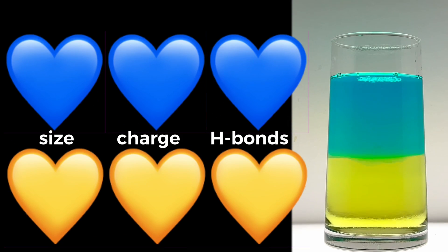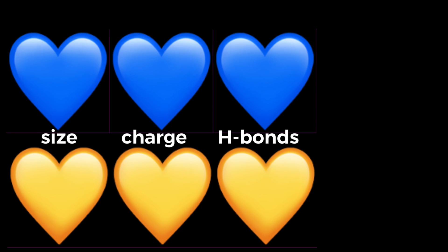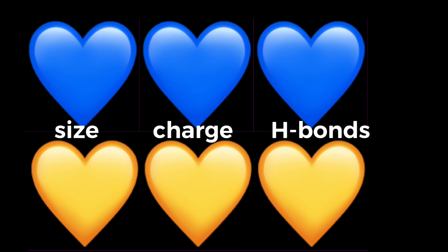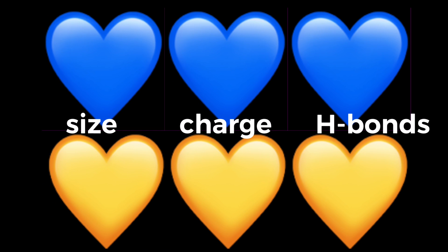There are three factors that allow the yellow dye to be more strongly attracted to water molecules than the blue dye. These include the size of the dye, the electric charge on the dye, and the number of hydrogen bonds each dye can form with water.